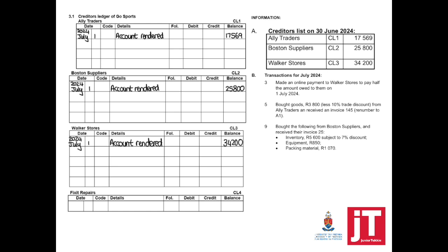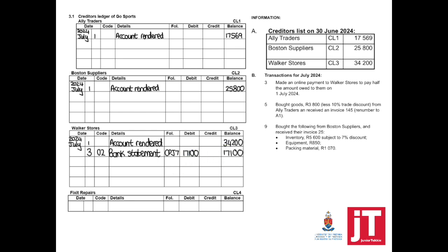Do not put anything under debit or credit. Note that Fix-It Repairs is creditors ledger number 4, but there is no creditors ledger number 4 — this means it is a new creditor for the business. Transactions for July 2024: On day 3, an online payment was made to Walker Stores to pay half the amount owed on 1 July 2024. The source document is a bank statement. Half the amount owed is $34,200 divided by 2, so the balance left is $17,100.